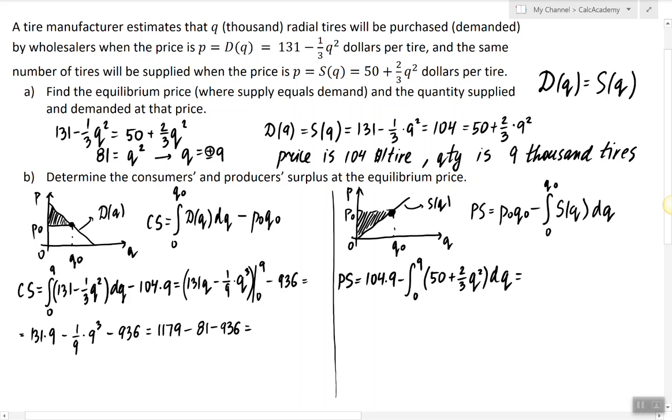1179 minus 81 minus 936 is 162. So what are the units here? The units here are the units of p times the units of q. The units of p are dollars per tire. The units of q are tires. So the answer is actually thousands of tires. So these will be thousands of dollars.